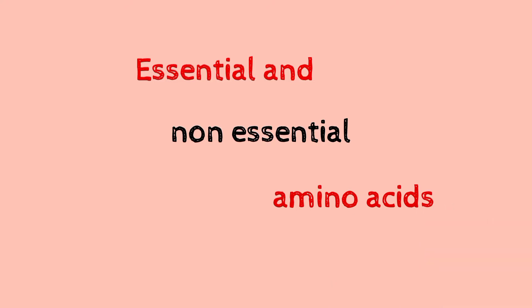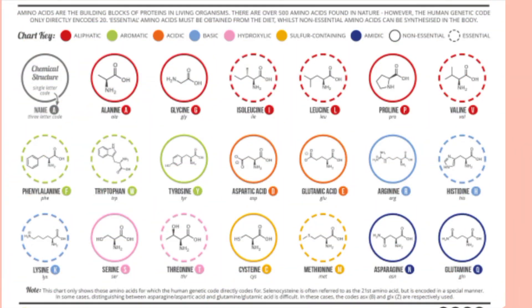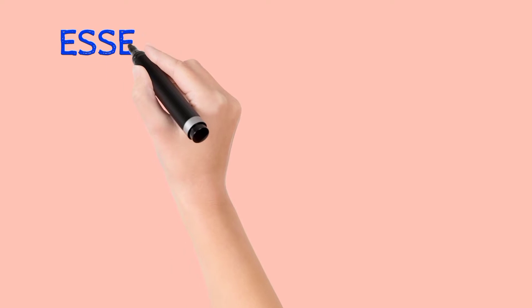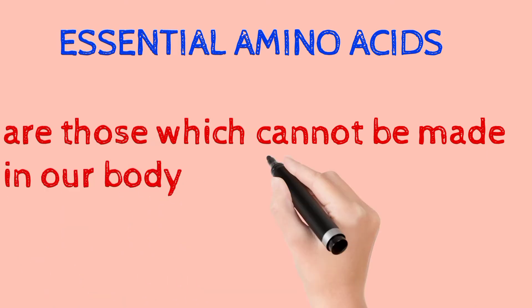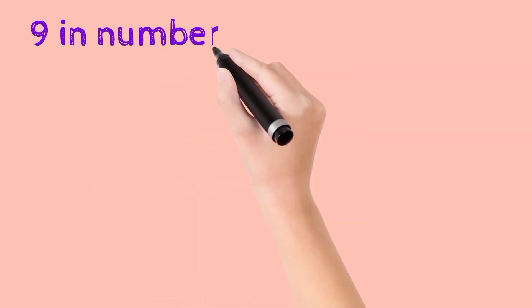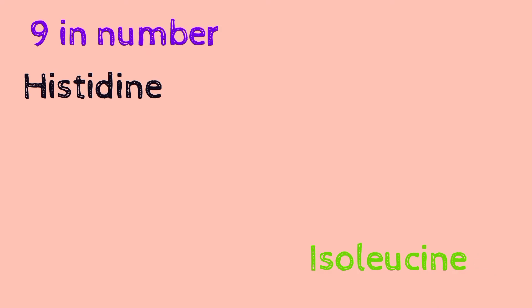What are amino acids? They are simple organic compounds that contain both a carboxyl group and an amino group. In the body, amino acids are the basic building blocks of protein. We have two types of amino acids: essential amino acids and non-essential amino acids. There are about 20 amino acids required in our body in large amounts. Essential amino acids are those which cannot be made in our body but are required essentially.